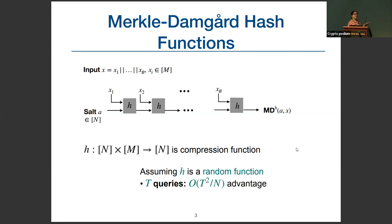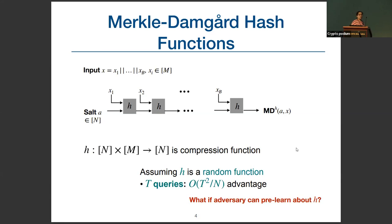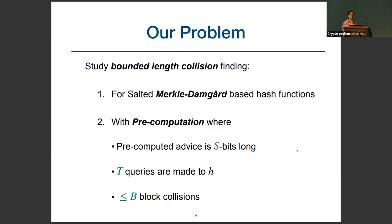Assuming that H is a random function, it is known that any adversary making T queries has an advantage of up to T²/N. But this is when the adversary has no information about H beforehand. It is perfectly possible and practical for an adversary to pre-compute some information about H and use that later to find better attacks. Rainbow tables is a very good example of pre-computing adversaries and their power to launch better attacks for function inversion. We study the power of pre-computing adversaries for collision finding in Merkle-Damgård-based hash functions. Adversaries get S bits of pre-computed advice, make at most T queries to H, and are required to find collisions that are at most B blocks long.